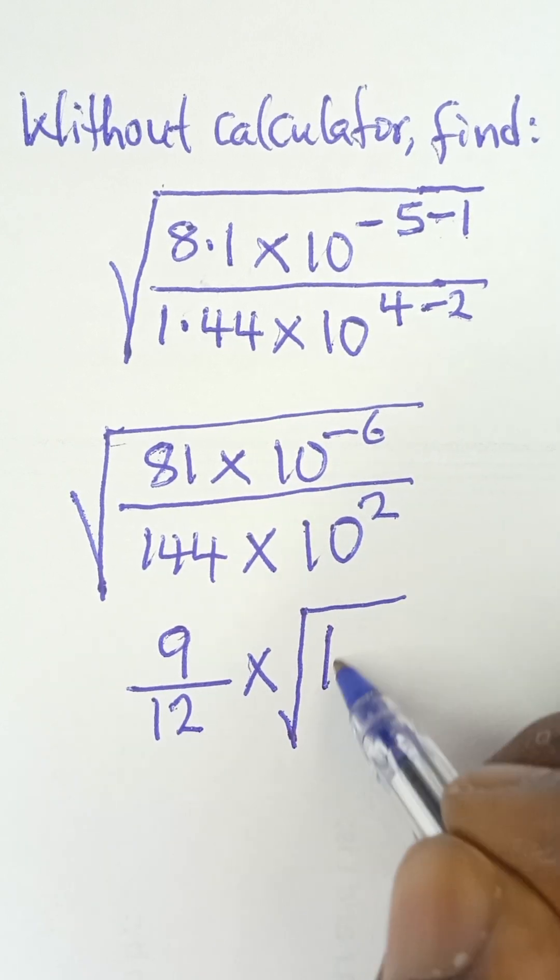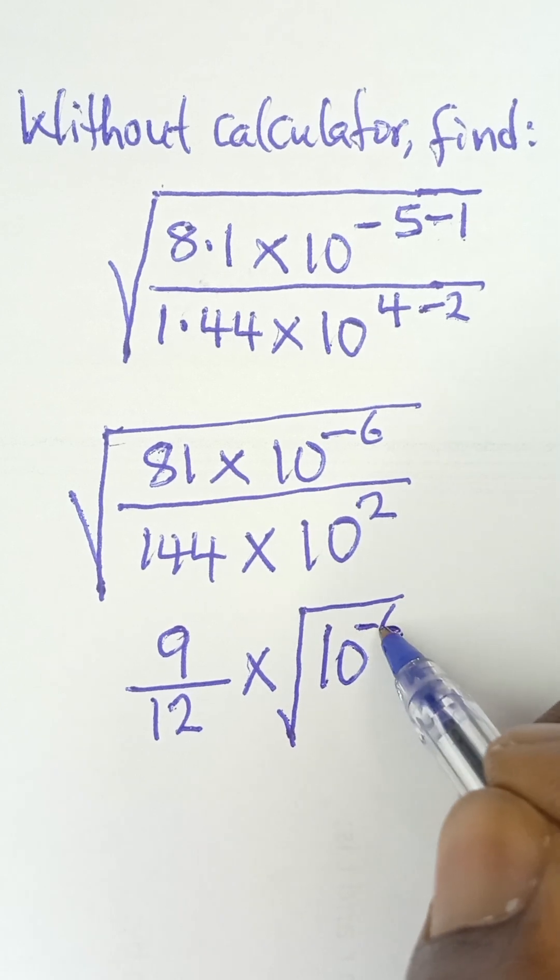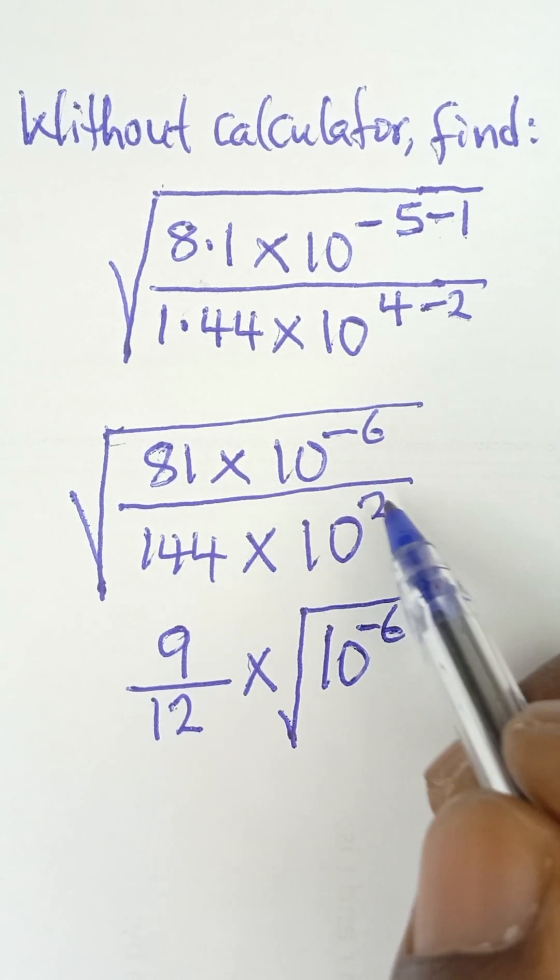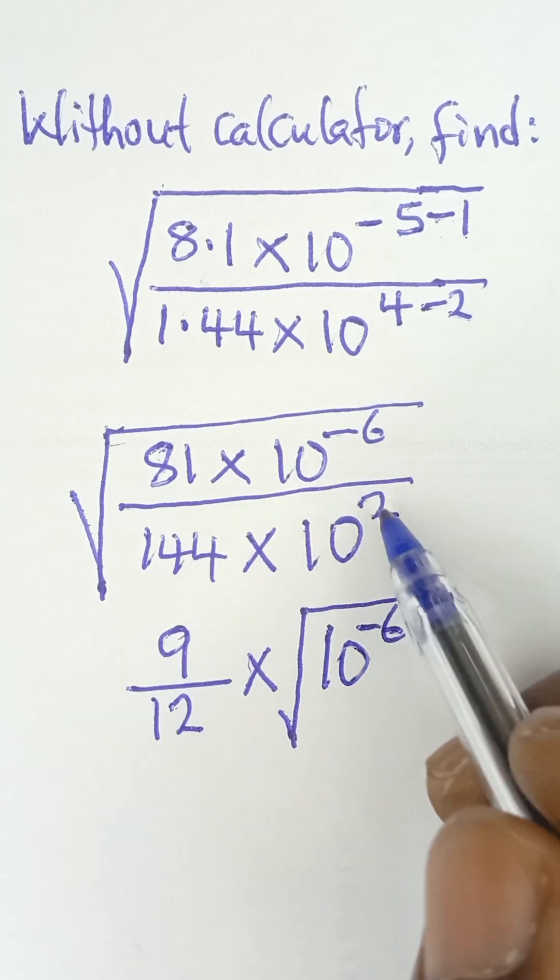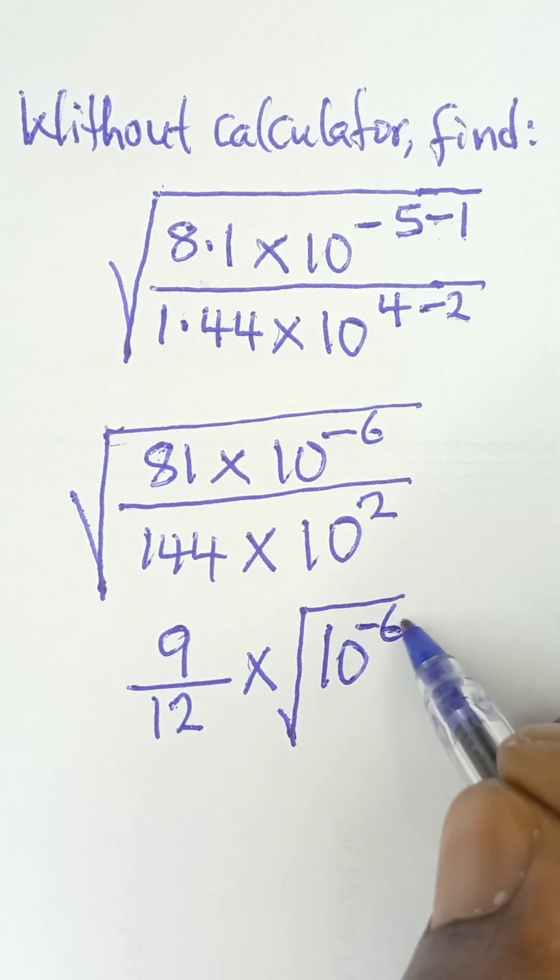This becomes 10 raised to the power negative 6. When this power is coming up, don't forget, the bases are the same, so we subtract the powers. So when this power is coming up, we can subtract because it's division.